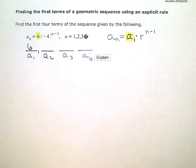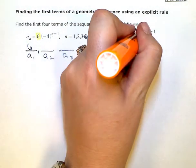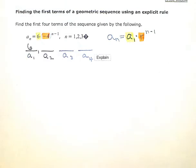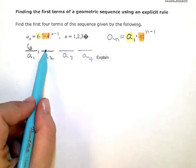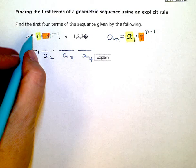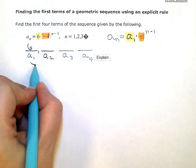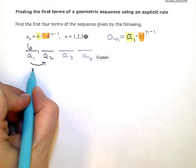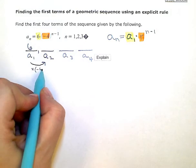The r stands for the common ratio. I can see right here that's the negative 4. That's the pattern or the number that I'm multiplying by to get from one term to the next. To get from the 6 to each subsequent term, I just need to multiply by negative 4.